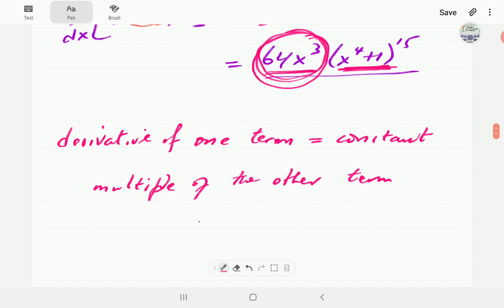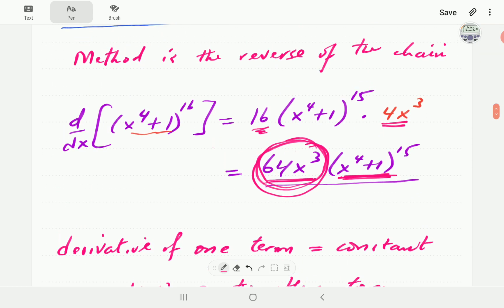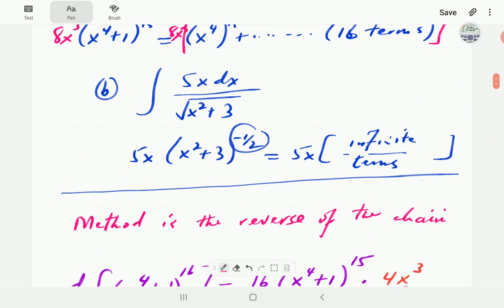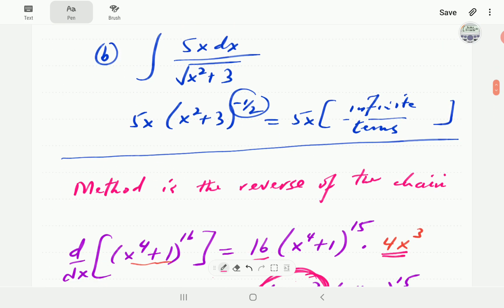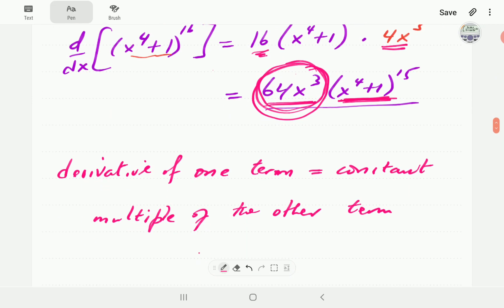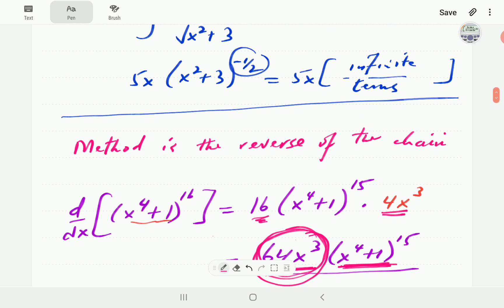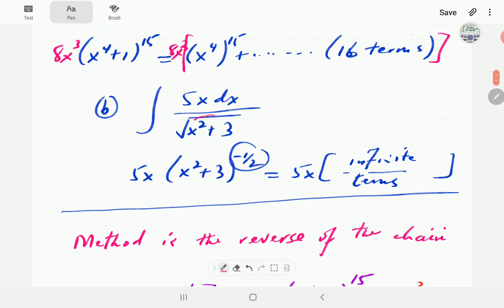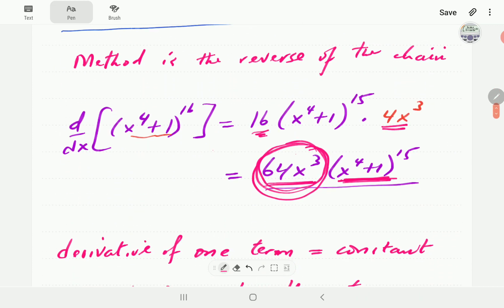So, whenever you get integrals with that type of situation, where you've got two terms with that type of relationship, then the method of u-substitution is natural. For this second one, look at this, the derivative of this is 2x. 2x is a constant multiple of 5x, or 5x is a constant multiple of 2x. Basically, you can get one from the other by multiplying by a constant.